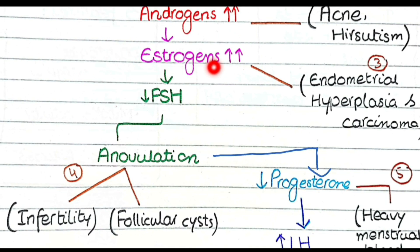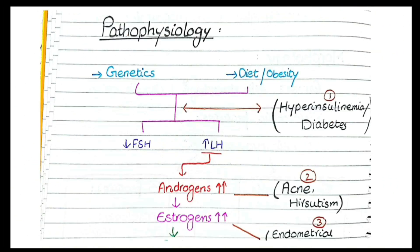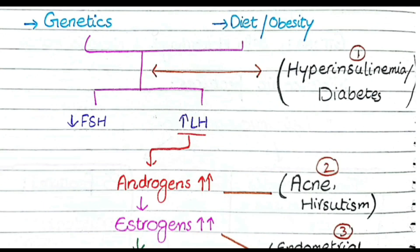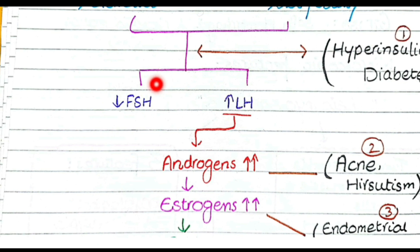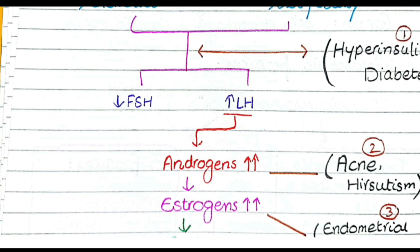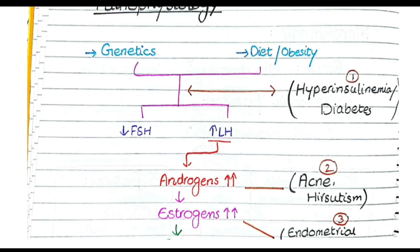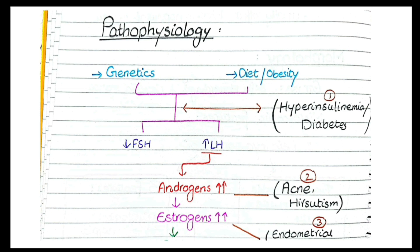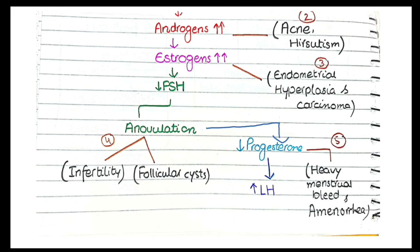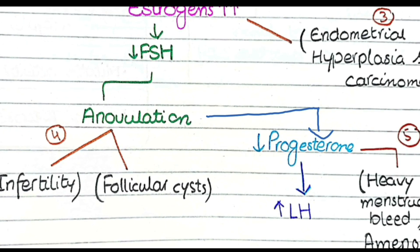These elevated estrogens cause feedback inhibition of FSH, so FSH is decreased. We studied that low FSH was the beginning of all these endocrine abnormalities, and after the cycle propagates it again results in a decrease in FSH — confirming this is a vicious cycle in which the disorder perpetuates itself.